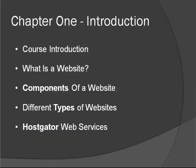Let's get to chapter one, which will basically be an introduction. We'll cover the course introduction, talk about what a website is and what components go into it — the domain name, hosting, and things like that. We'll discuss the different types of websites, from static HTML to dynamic websites like WordPress and Joomla. Then we'll talk about HostGator web services and what's offered there as far as domain names and hosting.